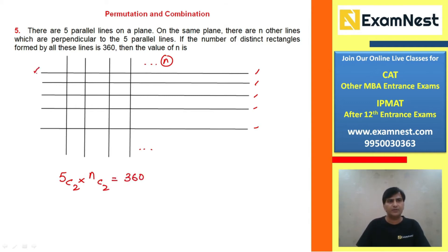5C2 equals 5 times 4 divided by 2, which is 10. So 10 times nC2 equals 360, which means nC2 equals 36. This means n equals 9, because 9C2 equals 9 times 8 divided by 2, which equals 36.